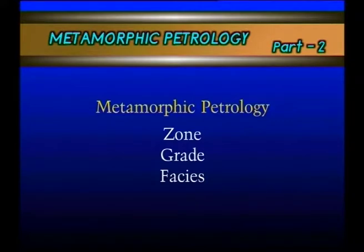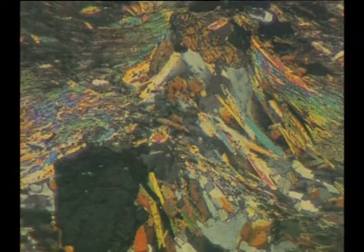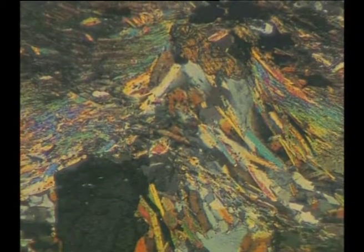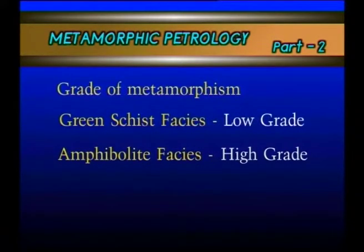Now let us consider the grade, zone, and facies of metamorphism. Regarding the grade of metamorphism, two important variables are pressure and temperature. Metamorphism may be low grade or high grade — in low grade metamorphism, pressure and temperature are lower than in high grade metamorphism. For example, in the greenschist facies the temperature and pressure are lower compared to the amphibolite facies. In this way, the grade of metamorphism varies with pressure and temperature.